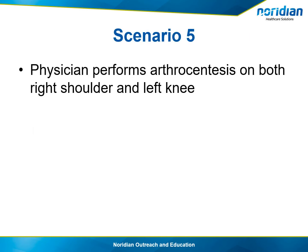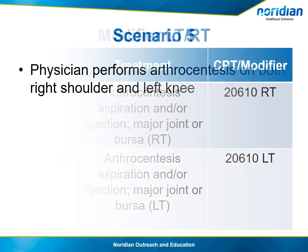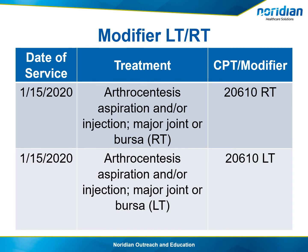Now we're getting to how to bill when doing more than one arthrocentesis in one day. In scenario 5, the physician needs to perform an arthrocentesis on both the right shoulder and the left knee. If the doctor did two joint injections — one to the right shoulder and the other to the left knee — modifiers RT and LT can be used.